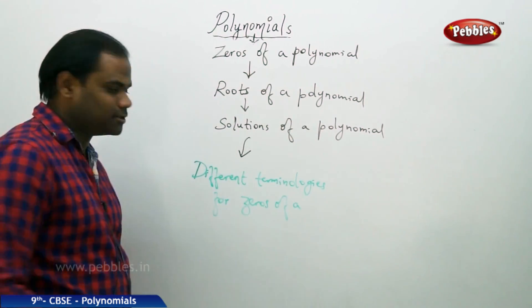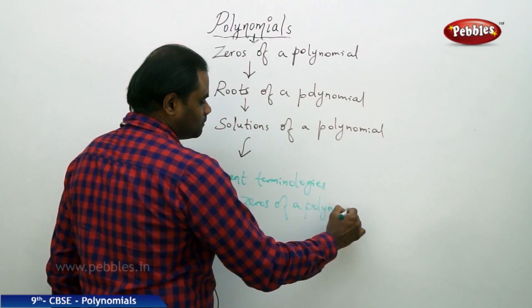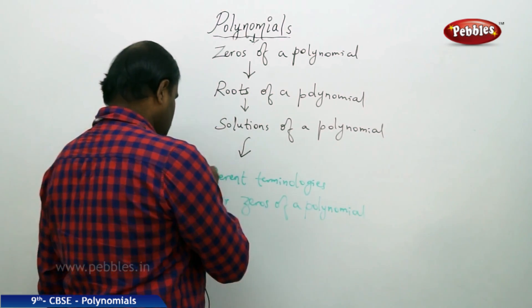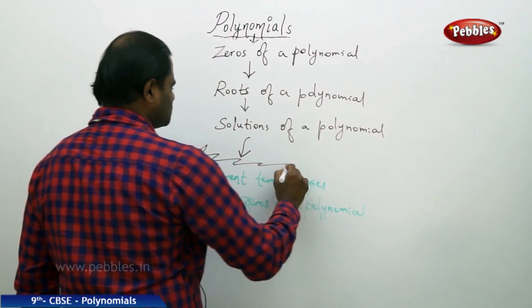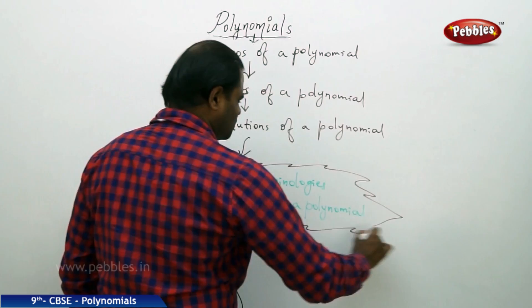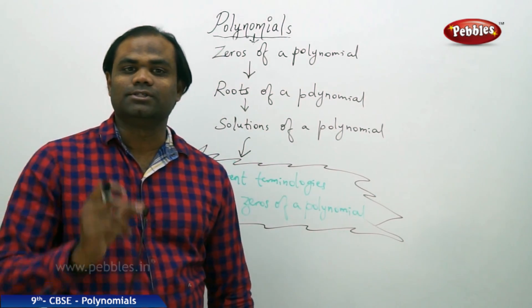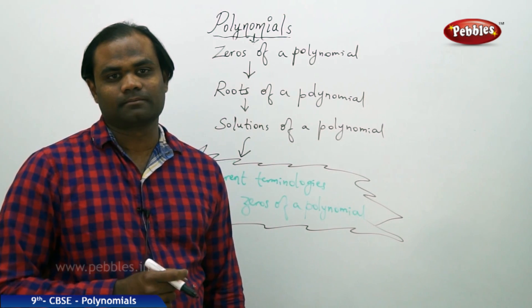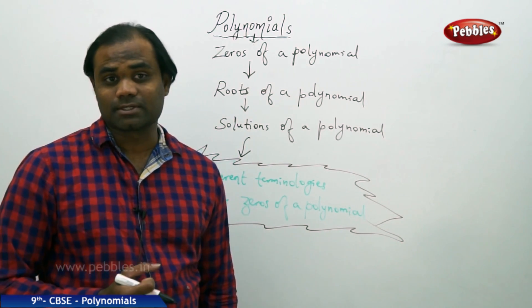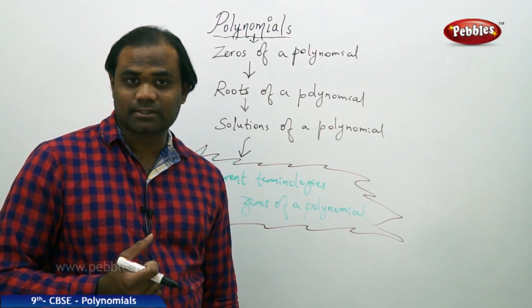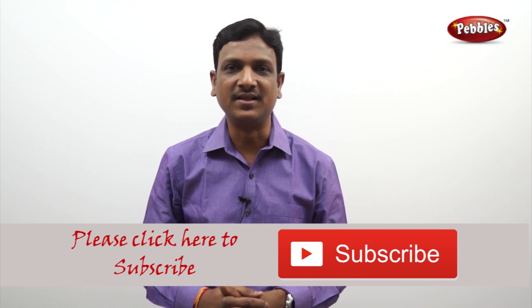To summarize the different terminologies for zeros of a polynomial: zeros, roots, and solutions all refer to the same concept for a given polynomial p of x with variable x.